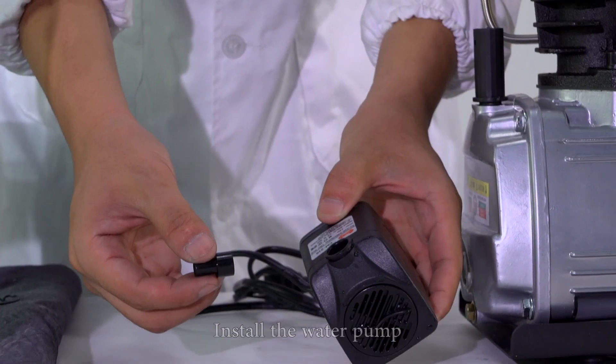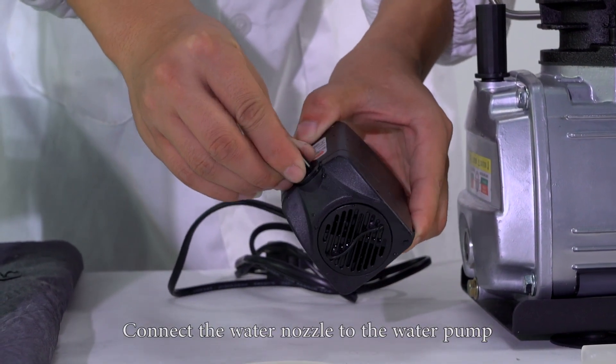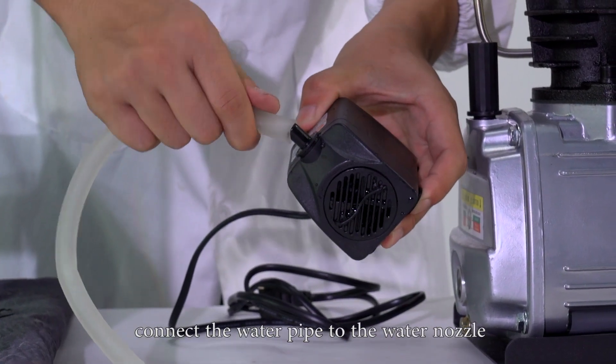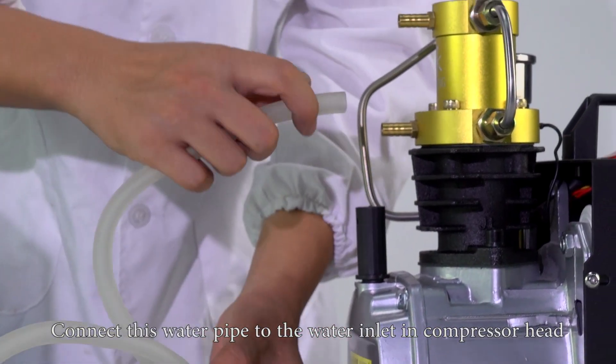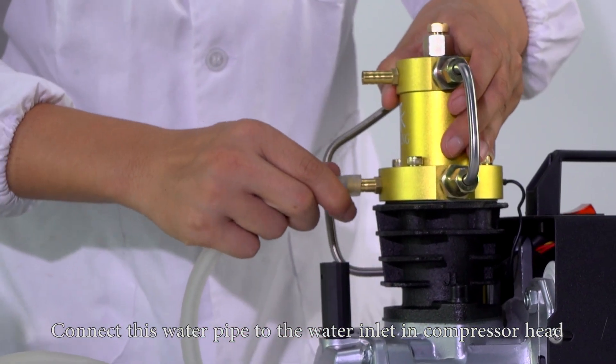Install the water pump. Connect the water nozzle to the water pump. Connect the water pipe to the water nozzle. Connect this water pipe to the water inlet in compressor head.